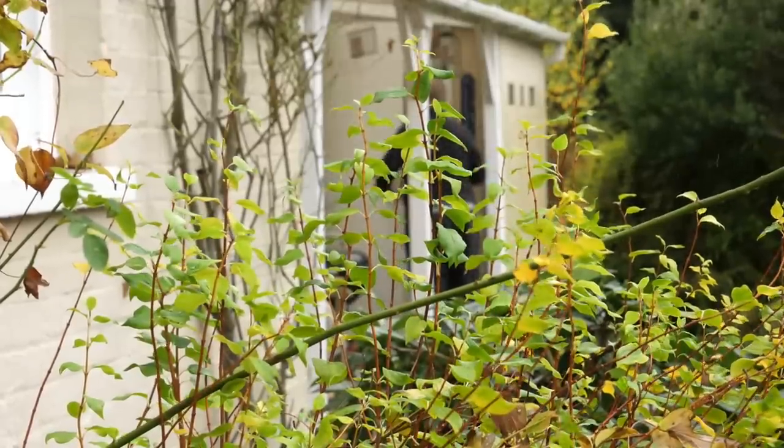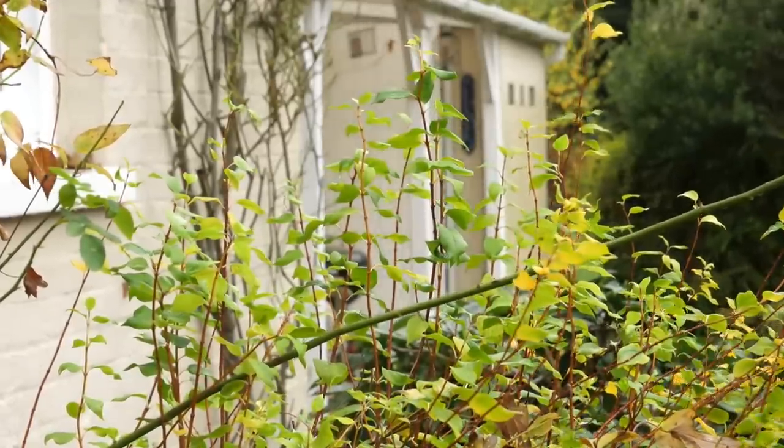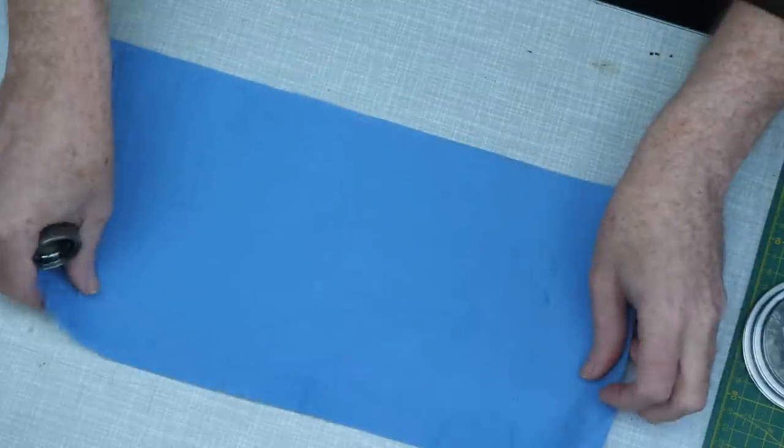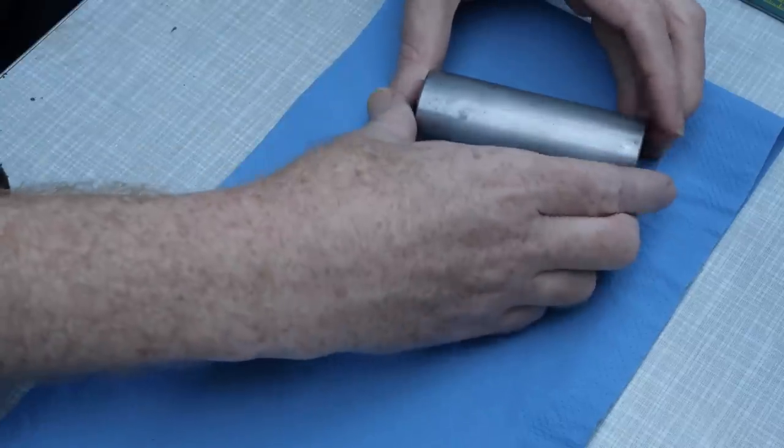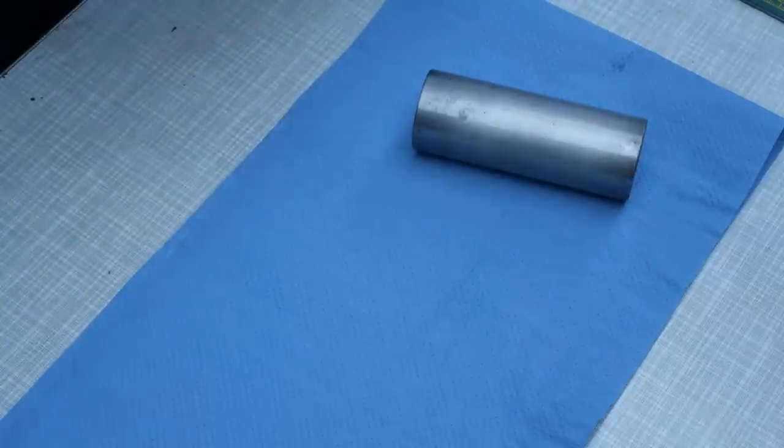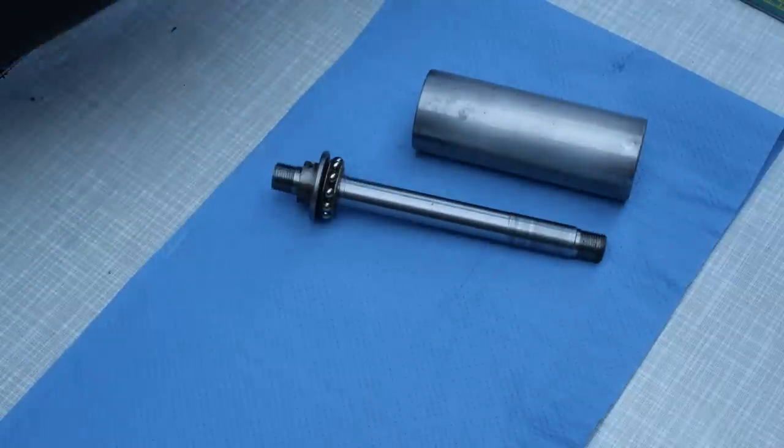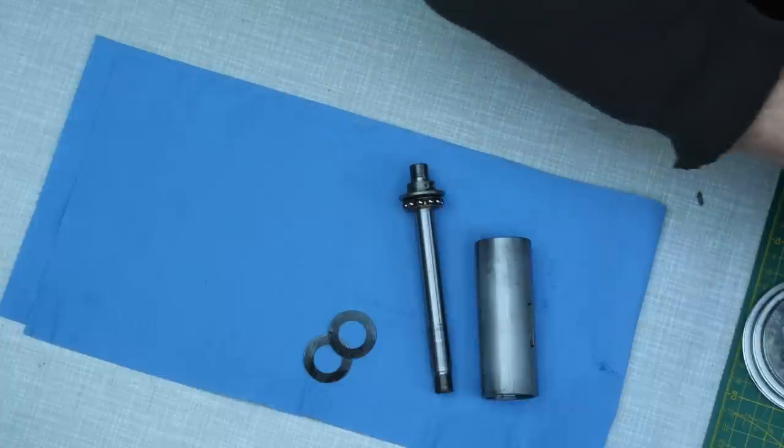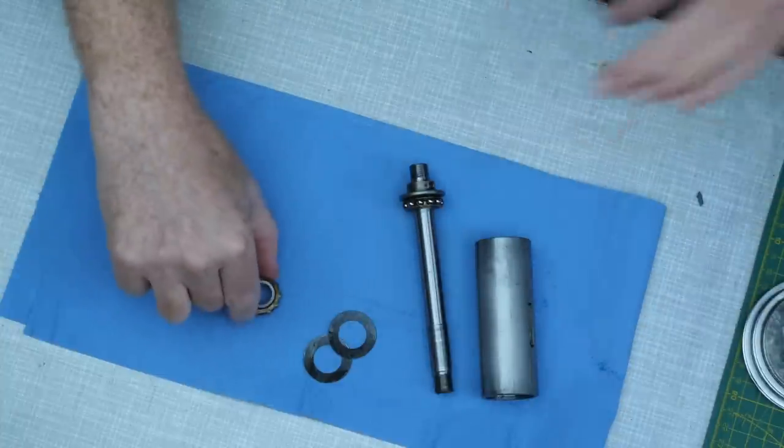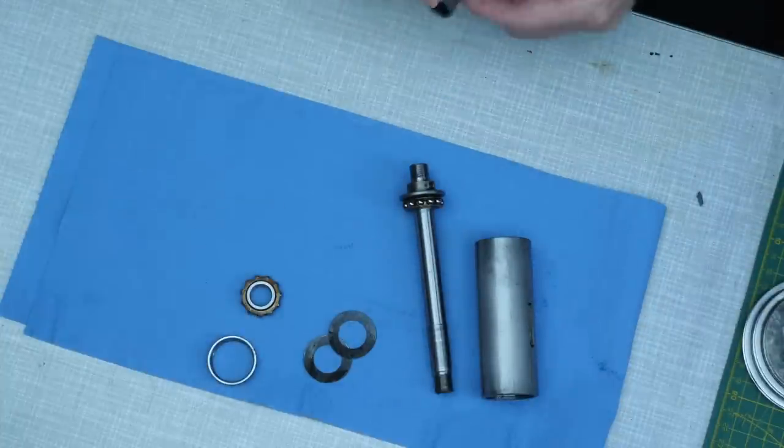The first section I'm going to reassemble will be the spindle. All parts inside the spindle need to be kept pretty clean, so I'm working on a freshly cleaned bench. In order, the parts are the spindle housing, the spindle shaft, the conical preload springs, the inner and outer parts of the rear bearing, and the spacer.